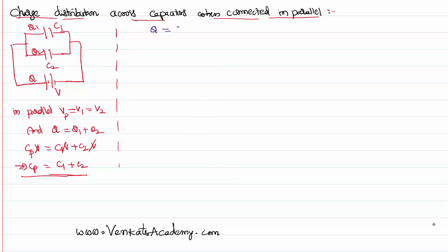Of course, Q equals Q1 plus Q2. That we have already discussed. Further, V parallel is equal to V1 equals V2. As we know, Q equals CV.